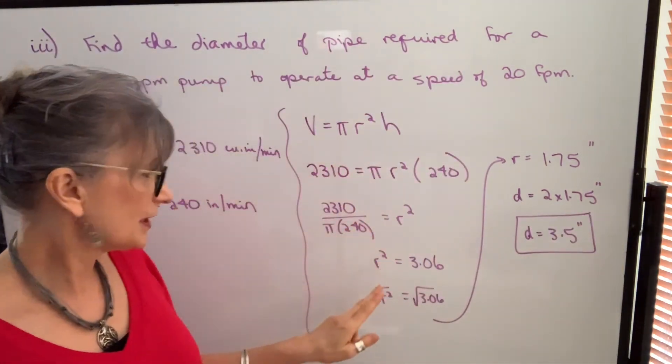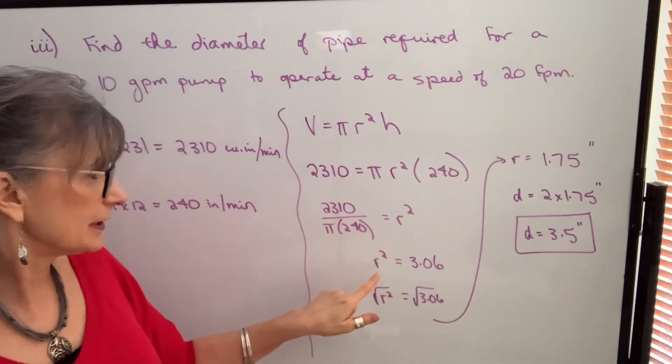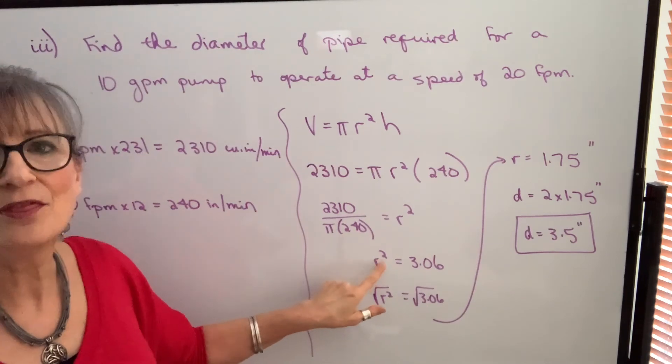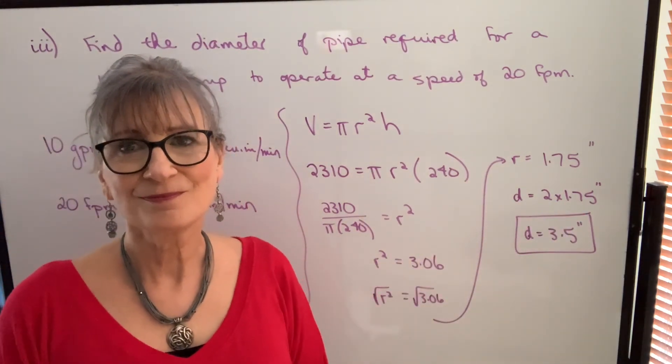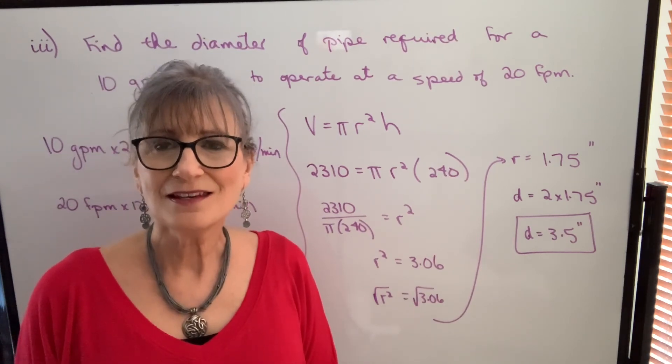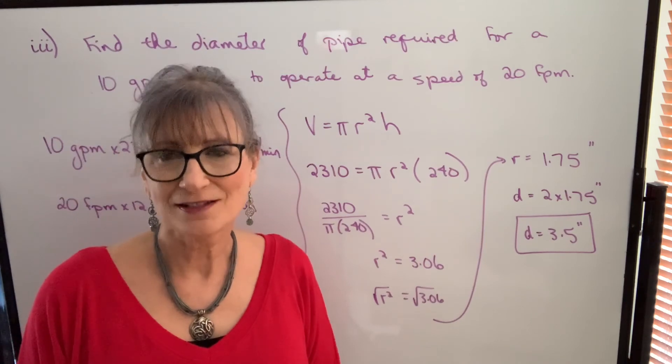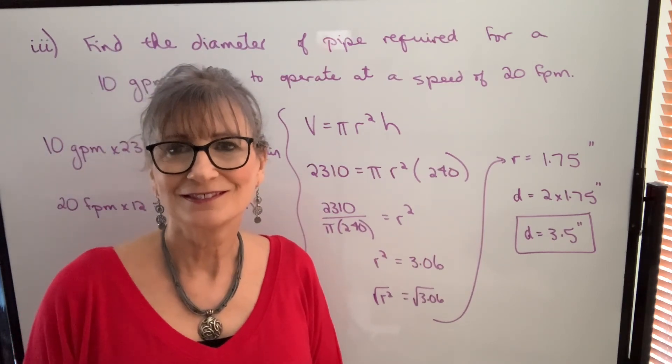So this one's a little trickier because we have a power involved. But just go through step by step. And when you get the r squared isolated, then you take the square root. And then you can find diameter. Understand the different types of questions that you can be asked. The key is making sure all of your units are consistent. And those units should be cubic inches or inches.